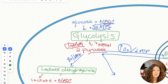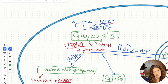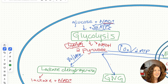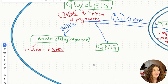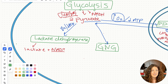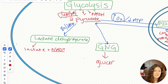This is gluconeogenesis — genesis meaning creation, neo meaning new, glucose meaning glucose. So we're producing new glucose. We take our pyruvate and basically go back the other way — reverse glycolysis with three different steps — and we produce glucose. This glucose can then be a precursor again for glycolysis.